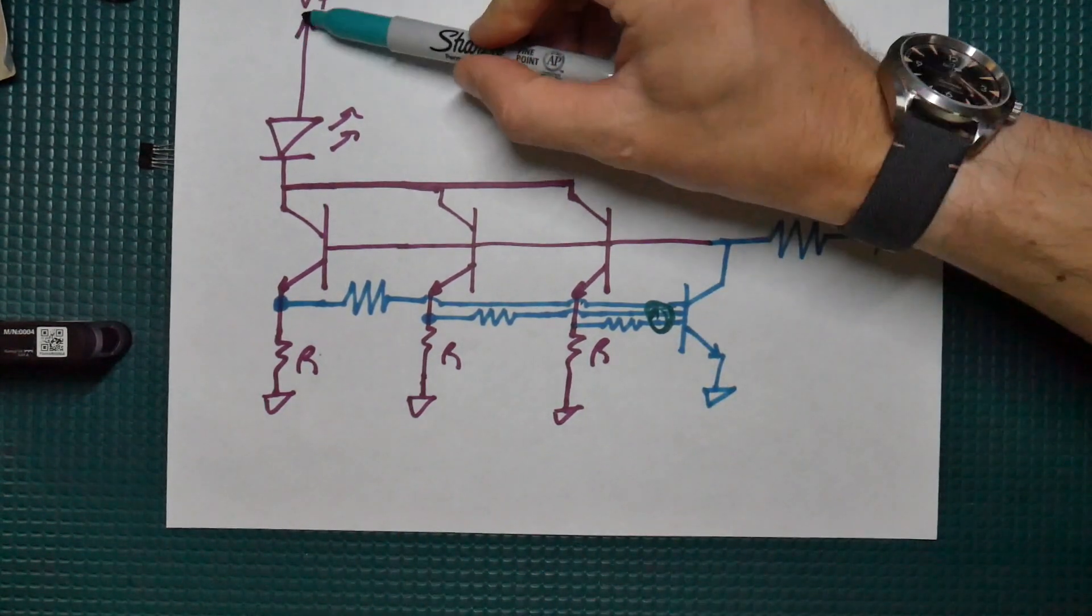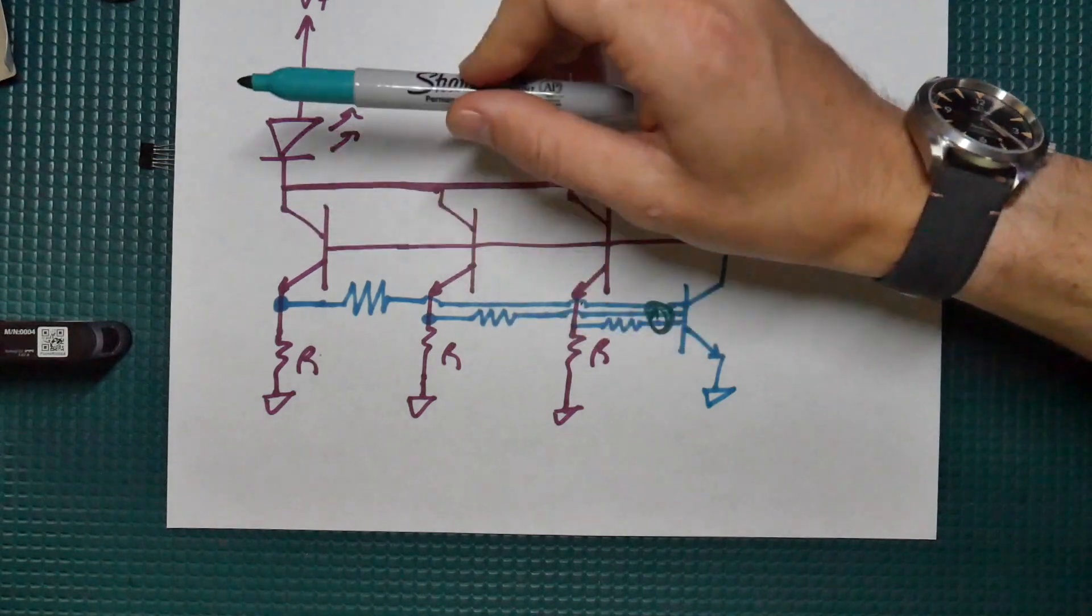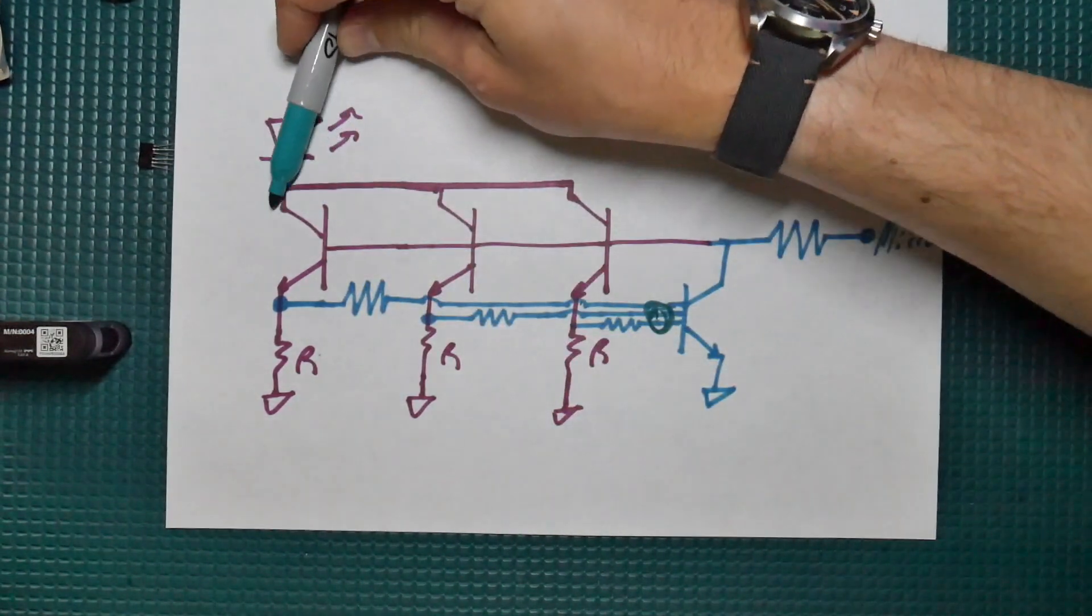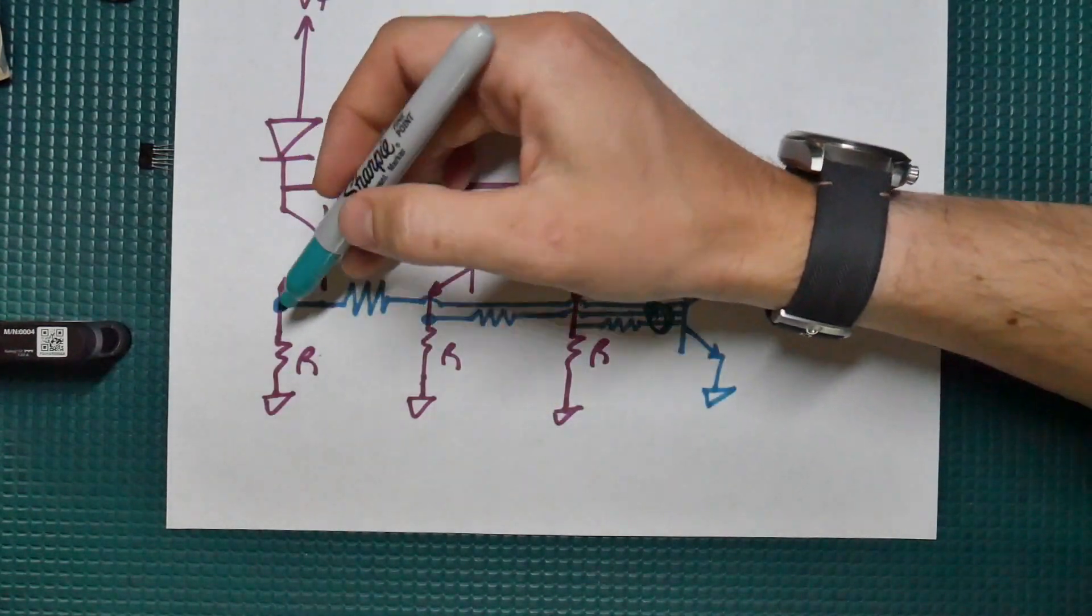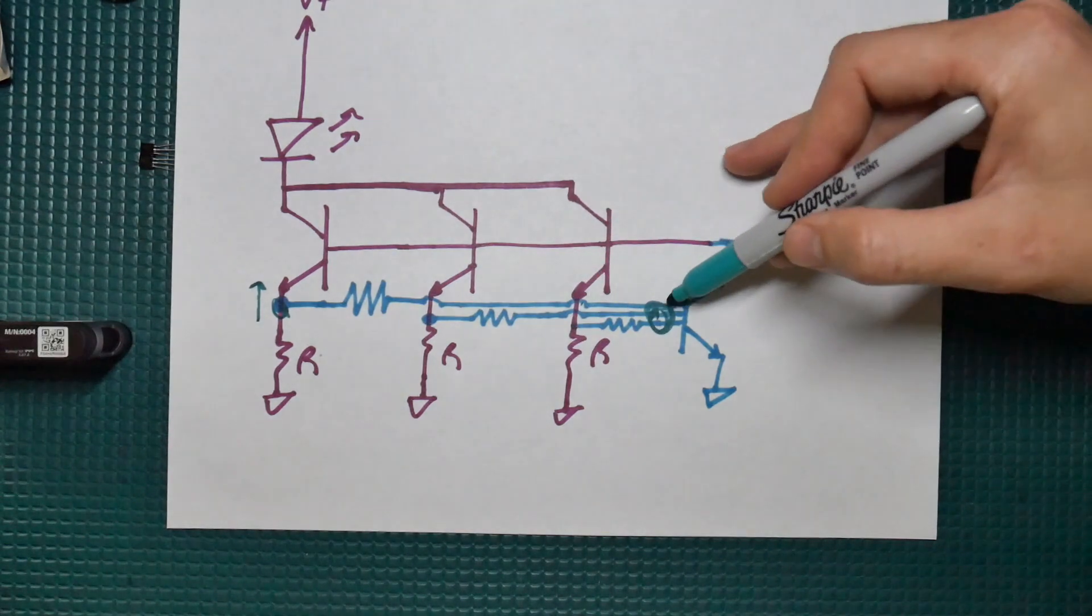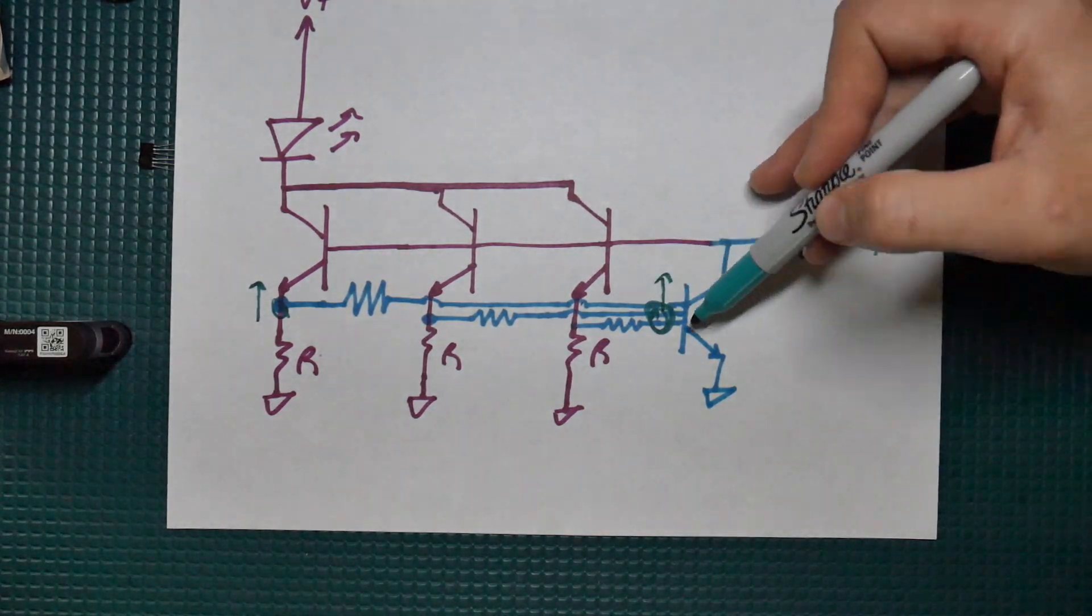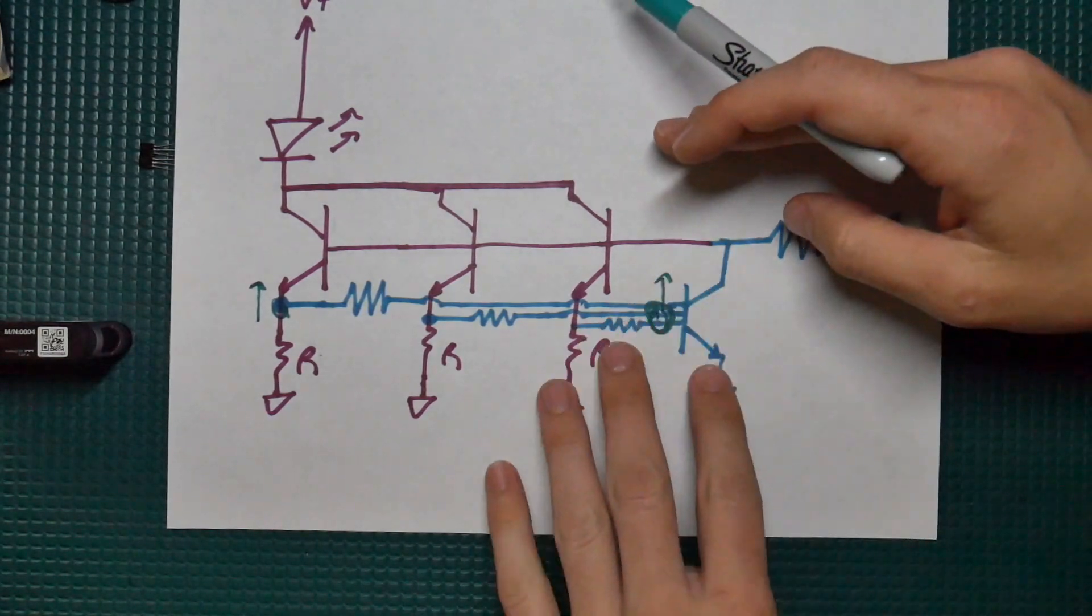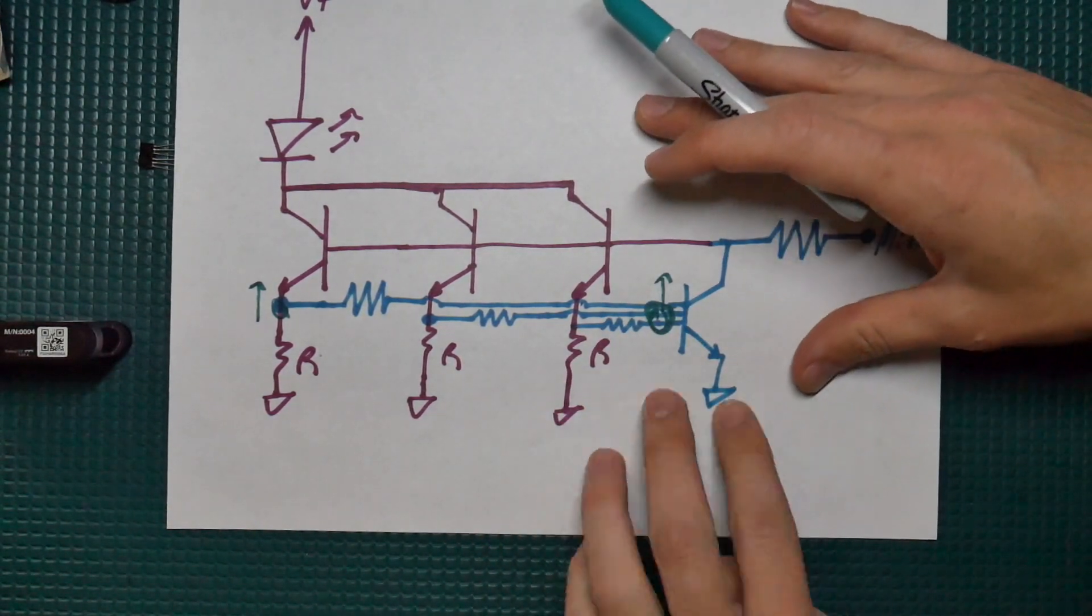Because check this out. If you had a situation where one of them starts pulling a little bit more current. You're going to have more current through here. Which means that the voltage at this point right here goes up. So the voltage here goes up. And then this transistor, the blue transistor, backs off. Okay so it stops pushing as much current.